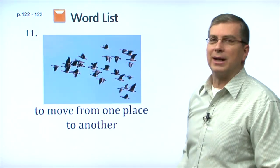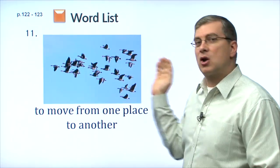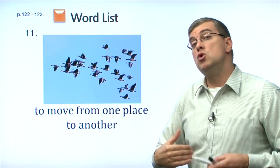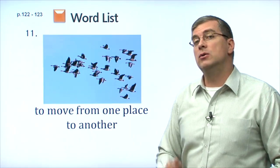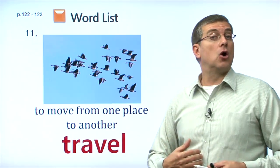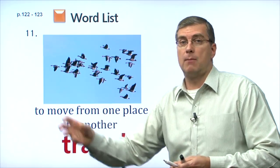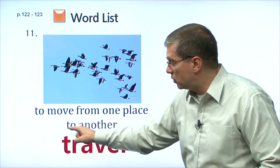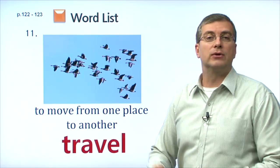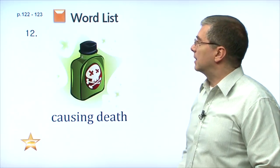Look at these birds. Where are they going? It must be getting cold, and they're going south. What are they doing? They are moving from one place to another. So if you move from one place to another, what are you doing? It's a verb: travel. I want to go to America — I will travel to America. Travel to somewhere, move from one place to another place. So these birds are traveling south.